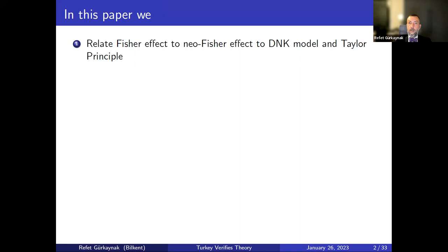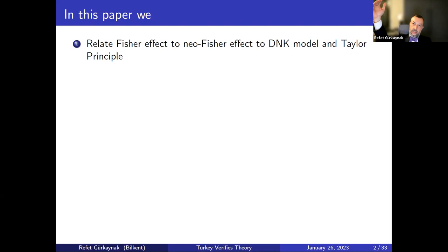The New Fisher effect is a backwards induction argument that effectively works through the expectations-augmented Phillips curve, where inflation equals something plus expected inflation. If I have correctly engineered lower nominal rates at steady state, and therefore lower inflation at steady state, then future inflation is lower and therefore current inflation will be lower. That is the New Fisherian disinflation understanding: because I have committed to a lower path of nominal rates forever, steady-state inflation must be lower, and thus I end up lowering inflation by lowering interest rates.